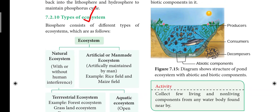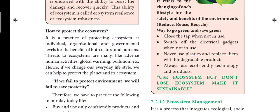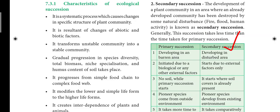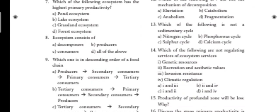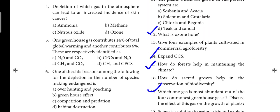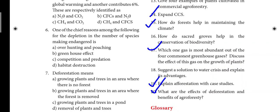Page number 143. What is the ozone hole — important 2-mark question. Check the types of ecosystems. Question 14: Expand CCS — Carbon Capture Storage, 2 marks. Question 15: How do forests help in maintaining the climate? Question 17: Which is the most abundant gas? Effect of ozone depletion. Effect of global warming — one question per topic.